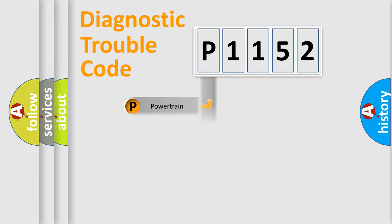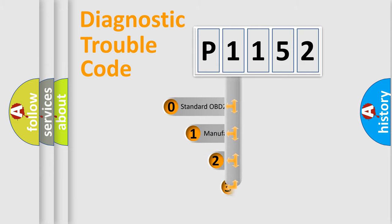Powertrain, Body, Chassis, Network. This distribution is defined in the first character code.